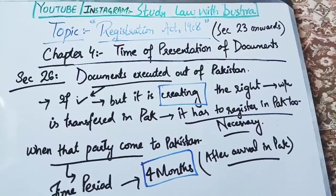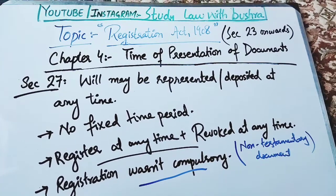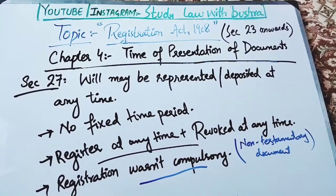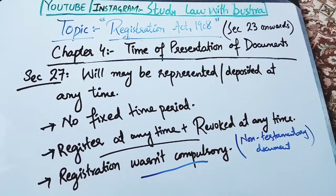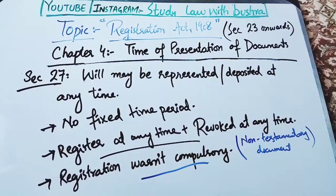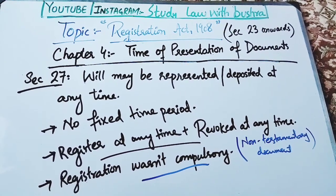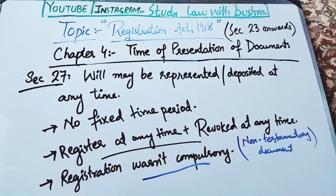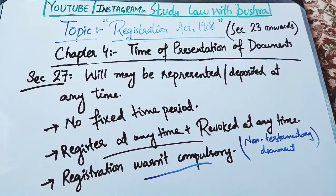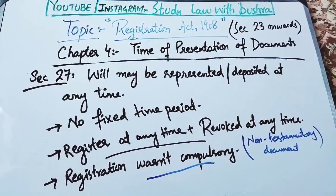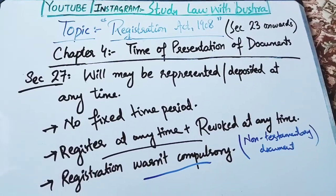इस video का last section है section 27, जो deal कर रहा है: Will may be presented or deposited at any time. इस section के according will को register कराने का कोई खास time period नहीं है — यानि जो four months registration की बात की वो will के लिए apply नहीं होगी। आप will को किसी भी time register करा सकते हैं और किसी भी time period में revoke भी किया जा सकता है। जैसा कि हमने ऊपर sections में पढ़ा था, non-testamentary documents की registration ज़रूरी है और उनके लिए four months का time period था। लेकिन will एक testamentary document है और उसकी registration compulsory नहीं है, लहाज़ा आप इसको किसी भी time किसी भी office में जाकर register करा सकते हैं।